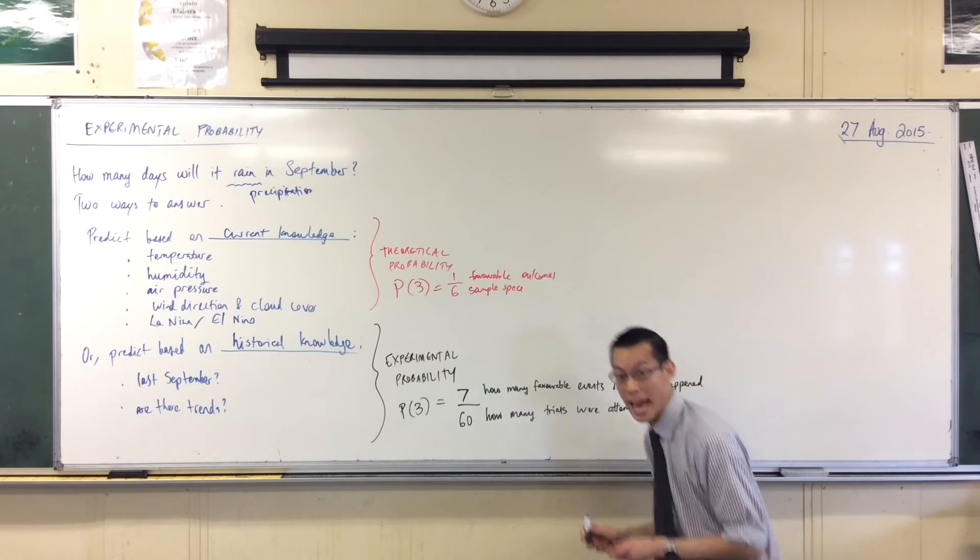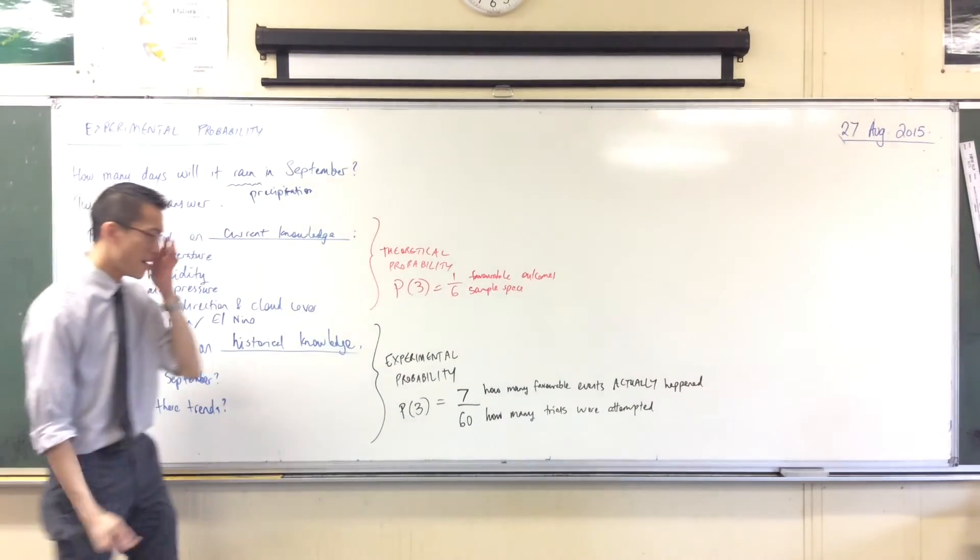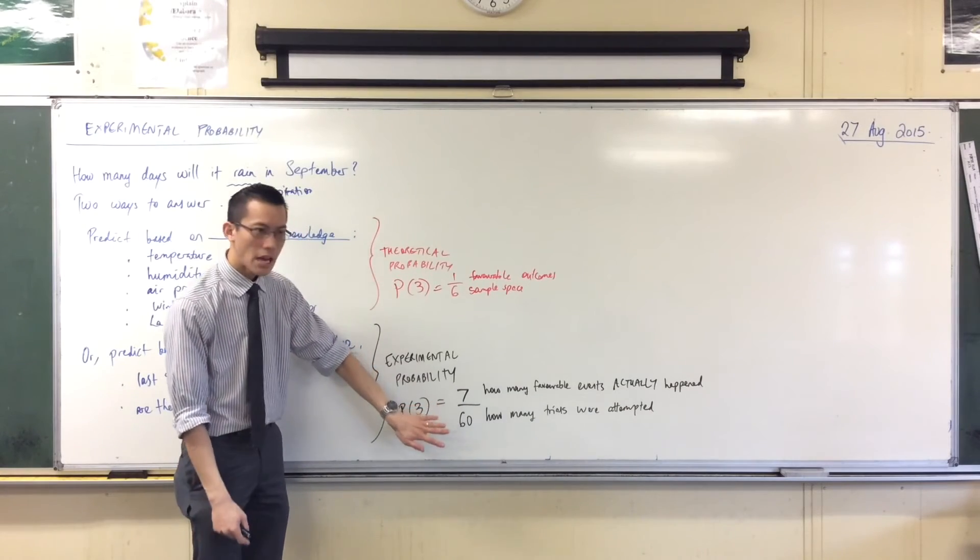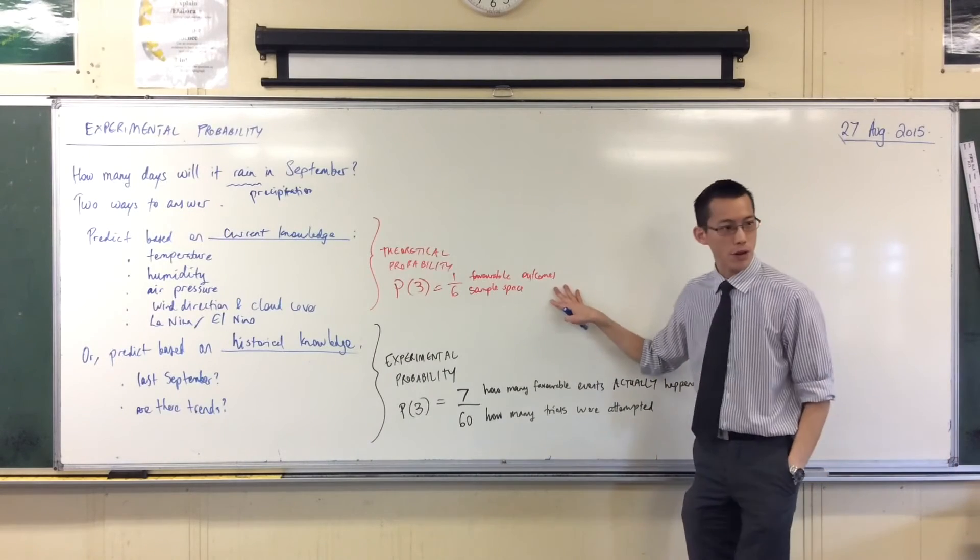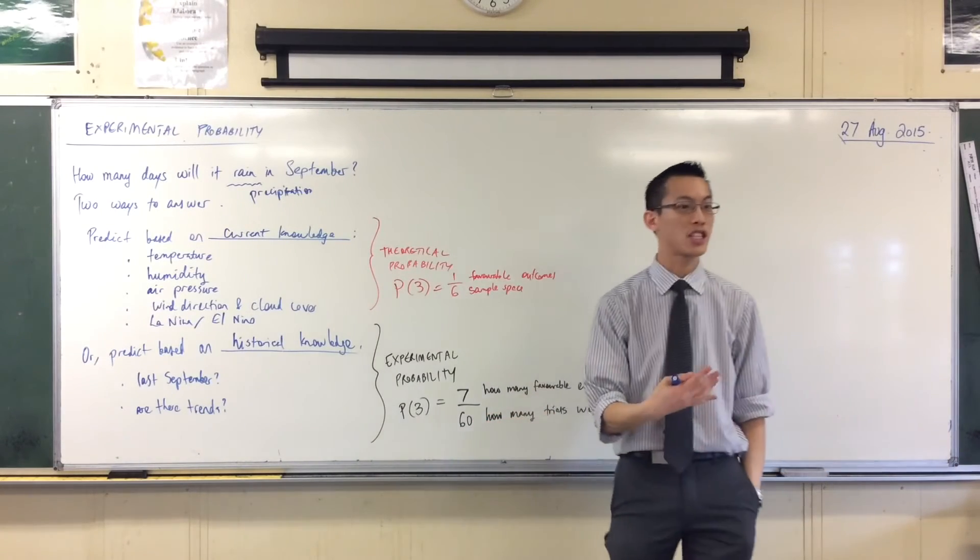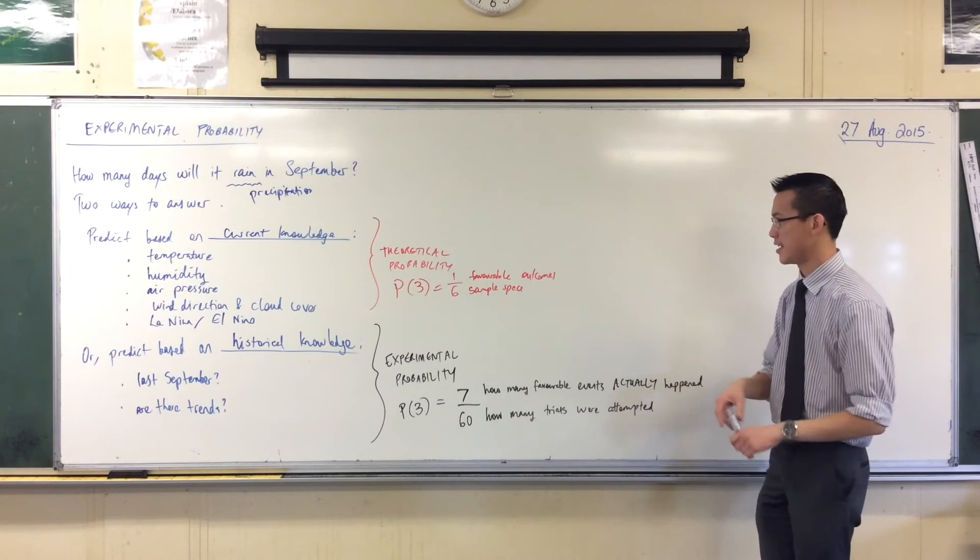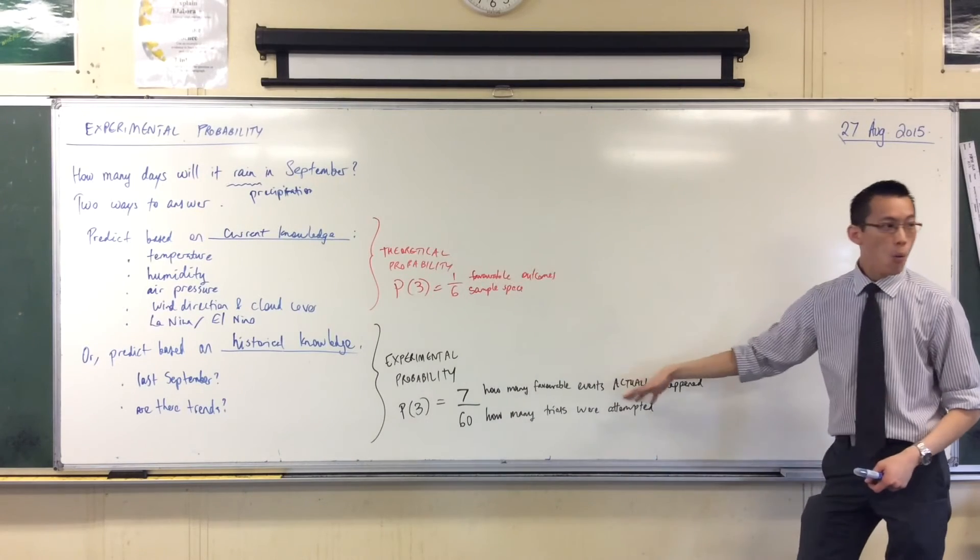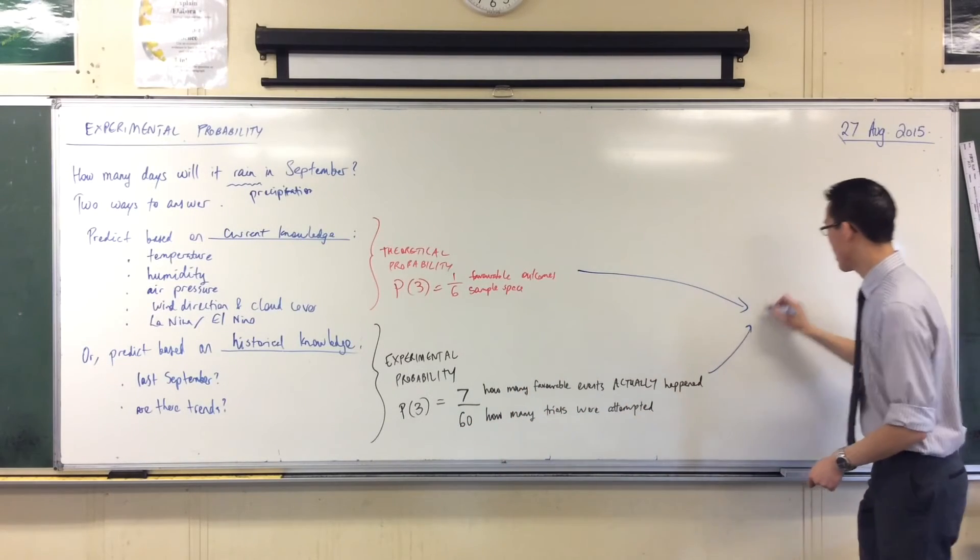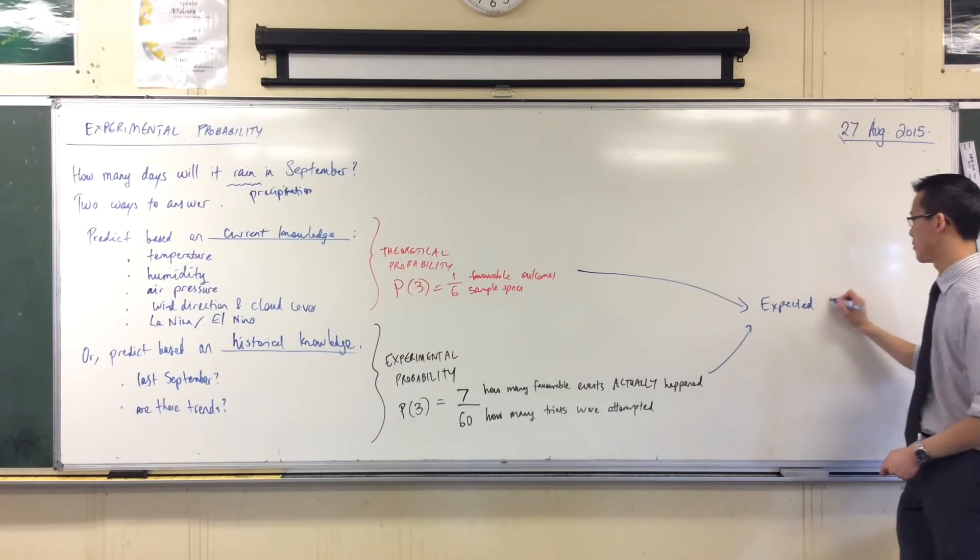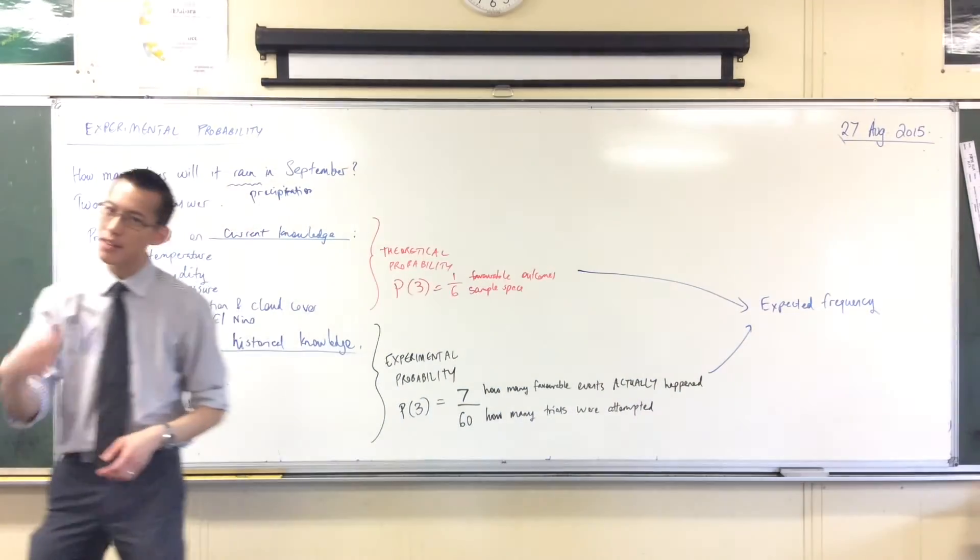Yeah, how many times did I try? How many trials were attempted? And again, it's important that they're actually done. From this there's a couple of ideas. Remember I asked you, based on the theoretical probability, how many threes would you expect? We said 10. So we can get an expected frequency from theoretical probability, or we could get an expected frequency from experimental. So expected frequency.